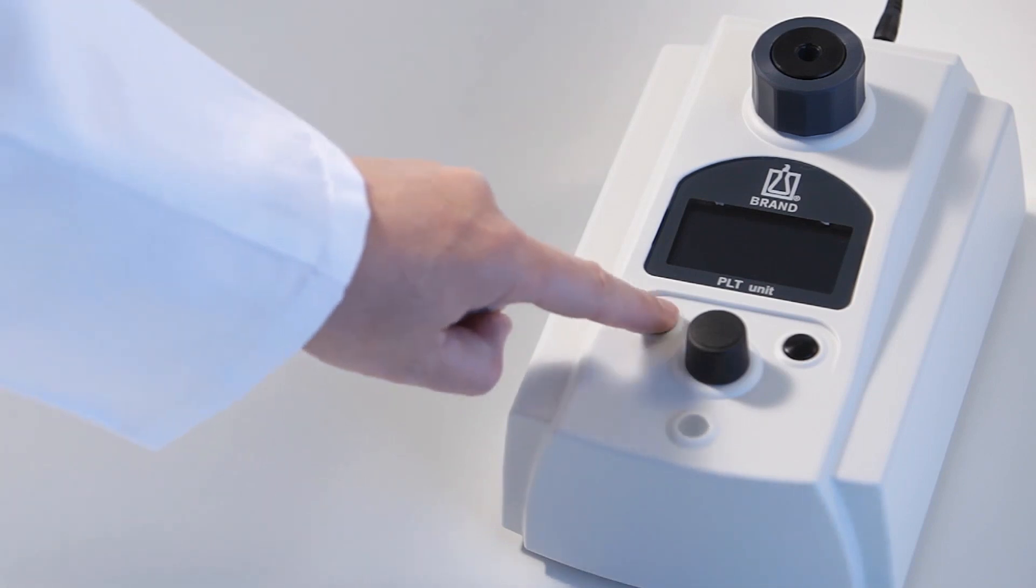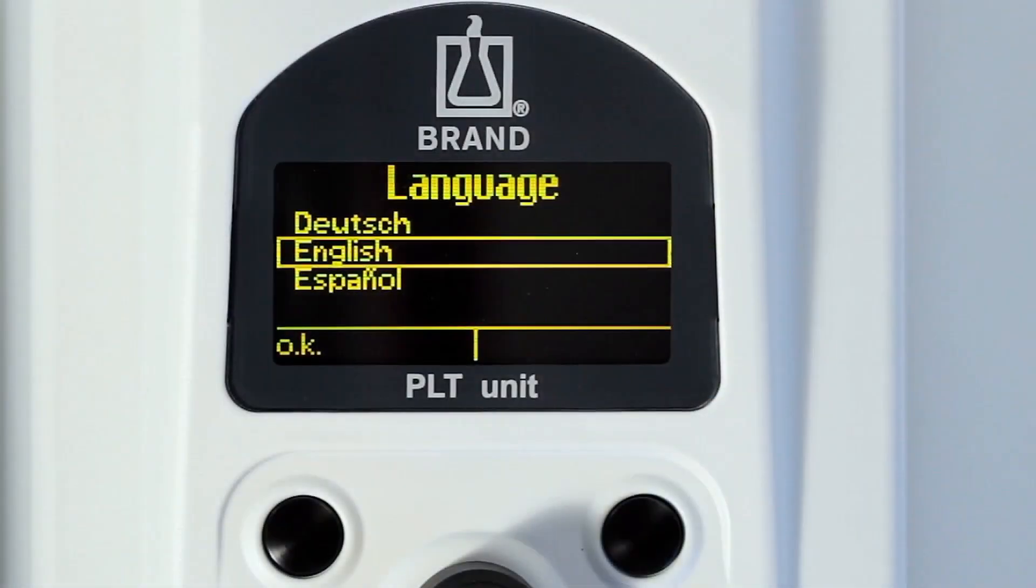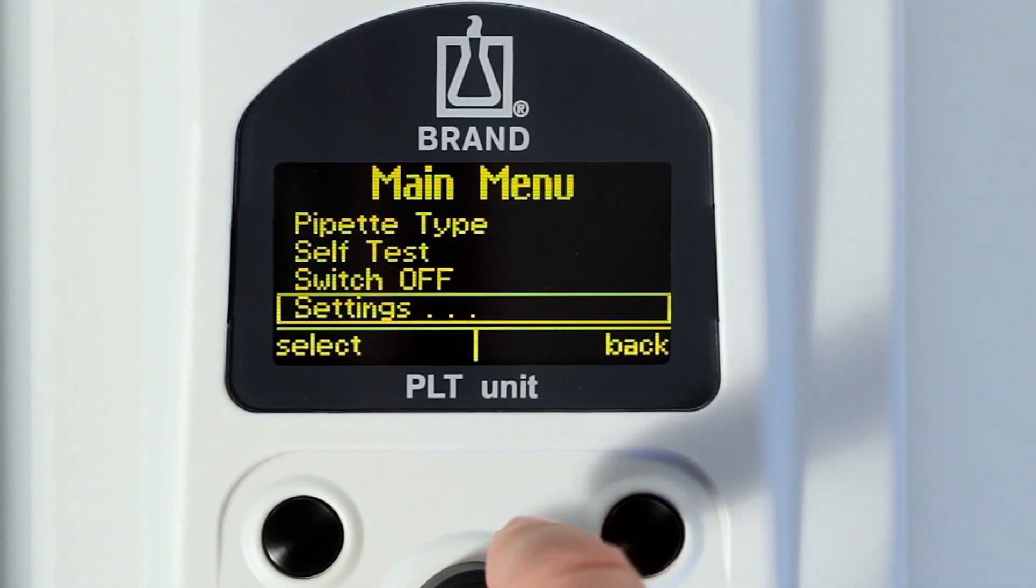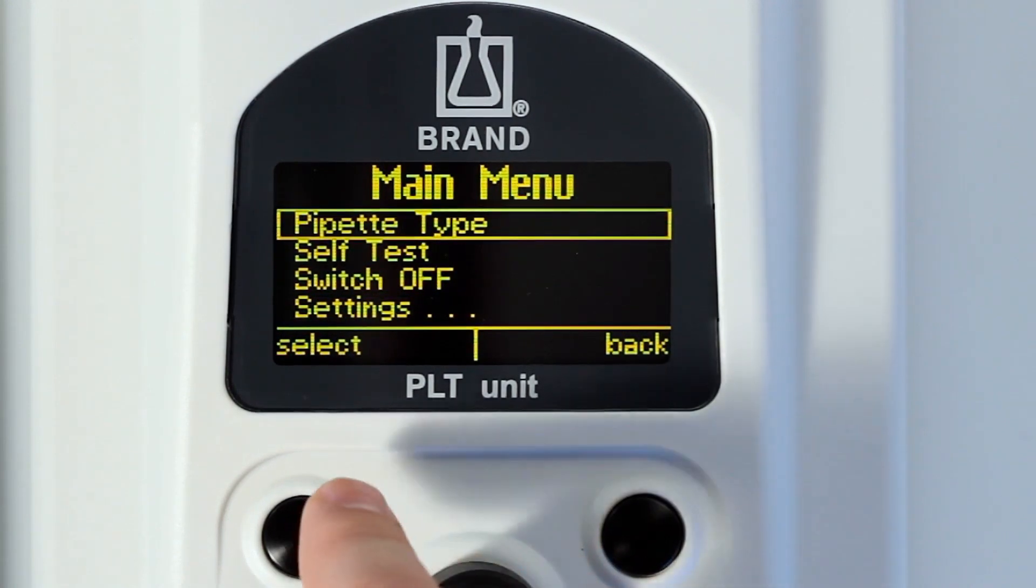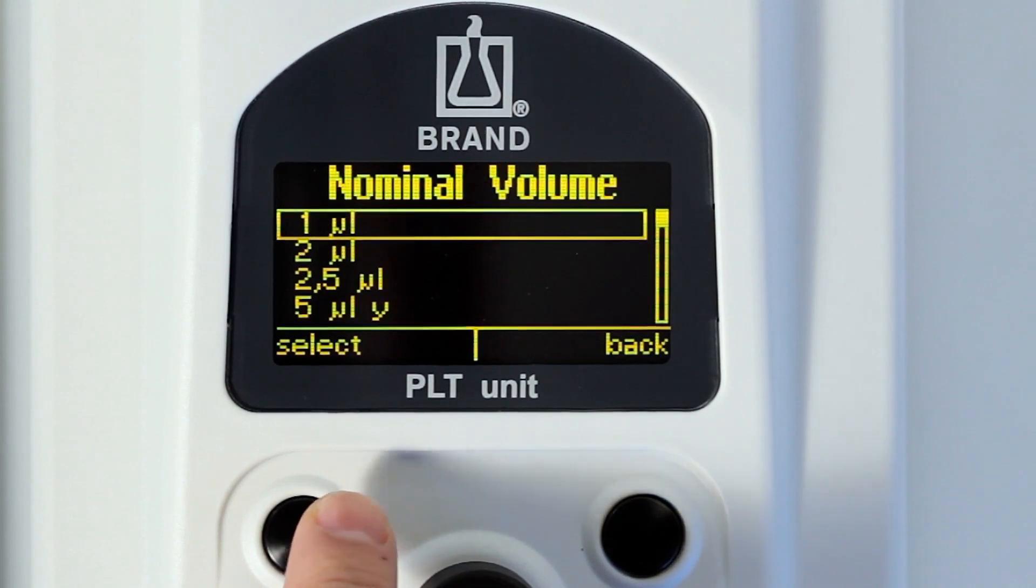First, switch on the unit. Then select the language, the pipette type, and the volume.